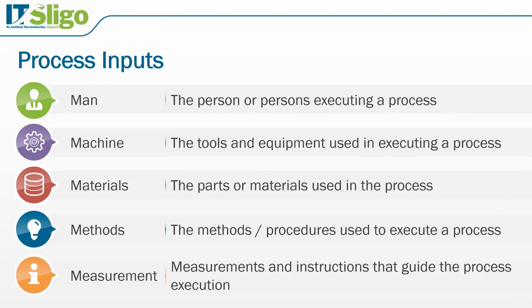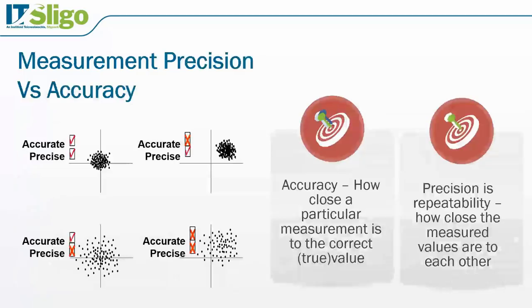Just to follow on from measurement — we have two definitions of measurement in Six Sigma. These terms are used interchangeably in day-to-day speech, but in the scientific, engineering, and quality world, we make a distinction between accuracy and precision.